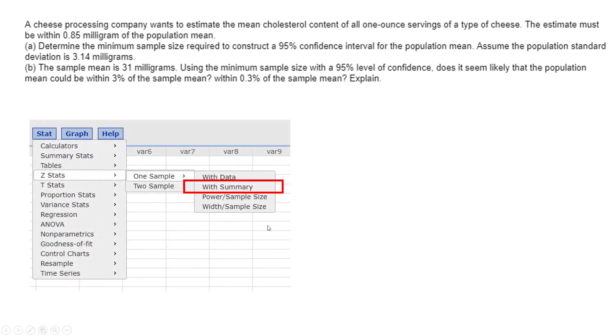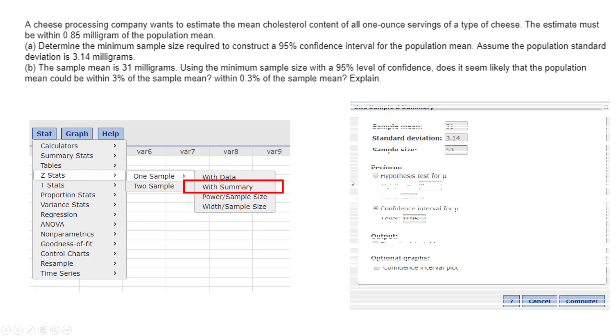So I can do this with StatCrunch once again. Stat, Z Stats, one sample with summary. They didn't give me any data. They just gave me some summary values.